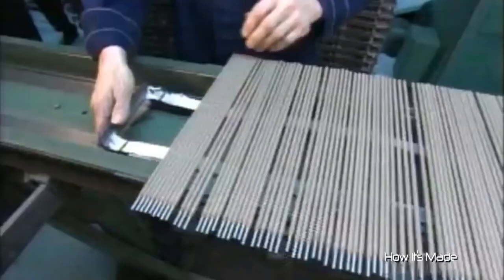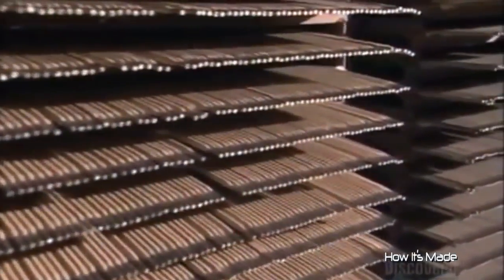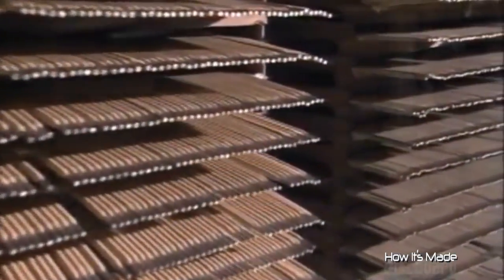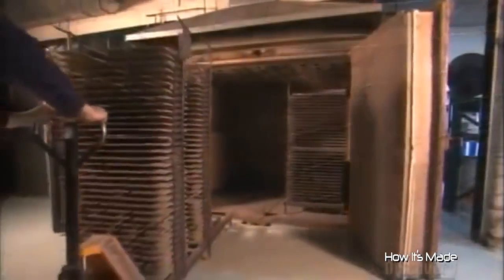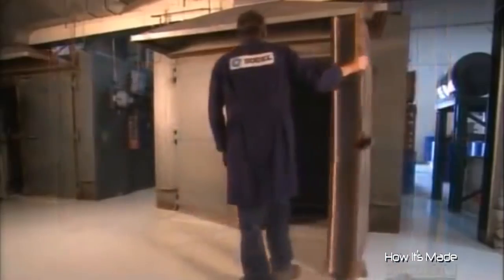A worker now checks for uneven coating and to see if the wire is well centered. The coating dries at room temperature for up to 72 hours. To cure the coating, workers put the electrodes in an oven heated to 485 degrees Celsius for up to five hours.